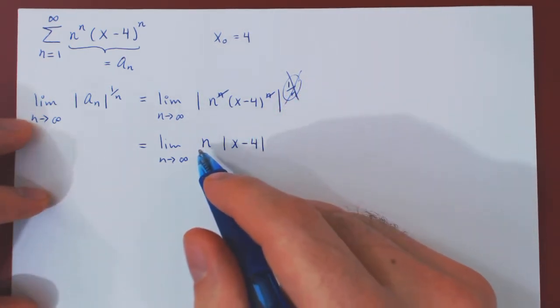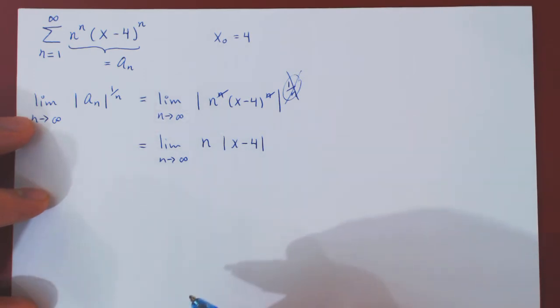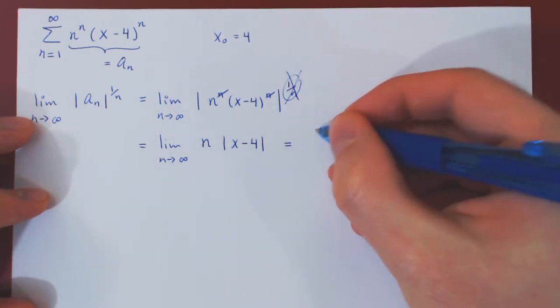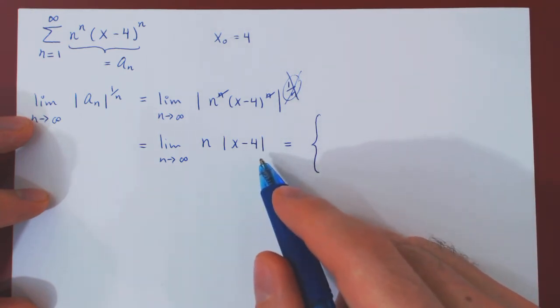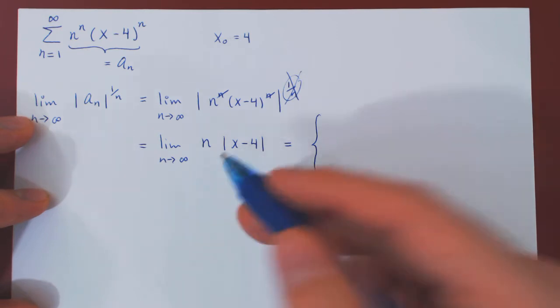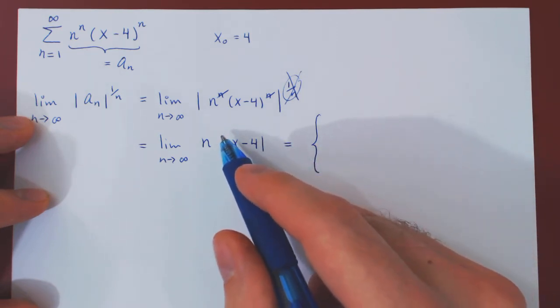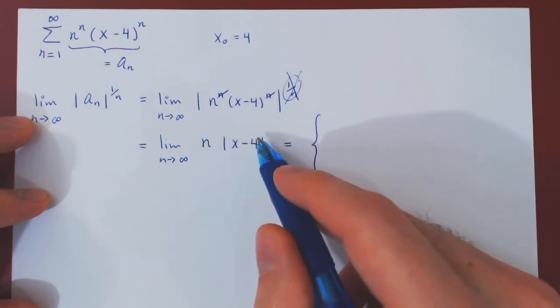And now, this is a simple but interesting limit. Think of what are the possibilities here. Either this expression is non-zero, or it is zero. Those are the only two options, as we have an absolute value, and this is non-negative.